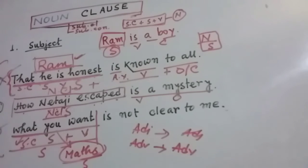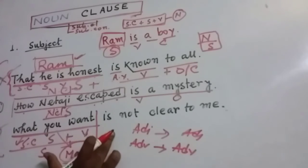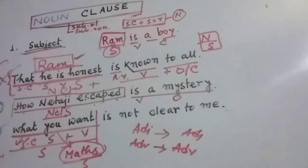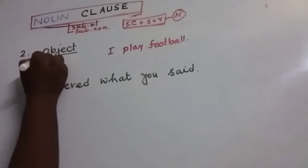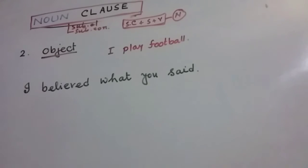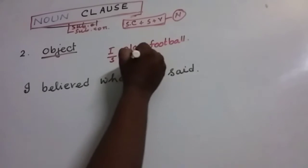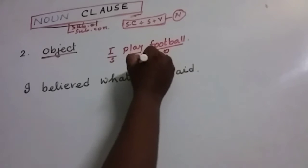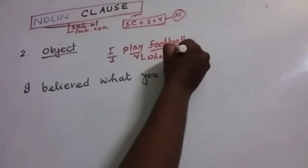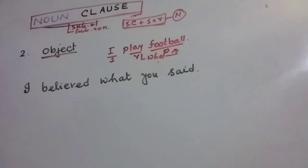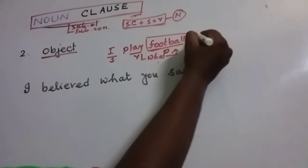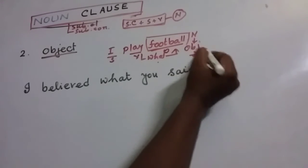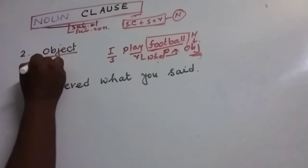So the noun clause is acting as the subject of the sentence — just as a noun does the job of a subject. The noun clause may also be the object of a sentence. For example: 'I play football.' Here 'football' is the object because if we ask the verb 'what do I play?' the answer is football. Football is a noun, so a noun can be used as an object. Therefore, a noun clause can also be used as an object of a sentence.